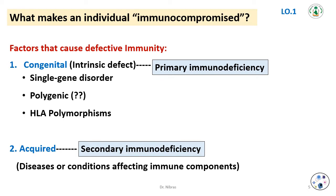In congenital immunodeficiency, mutations occur to cause primary immunodeficiency. The severity of such diseases can vary depending upon the particular mutation in a given gene. Some patients have a mutation that results in the complete absence of the gene product, whereas others may possess a mutation that leads only to a slight misfolding of the protein, resulting in relatively minor impairment of function.